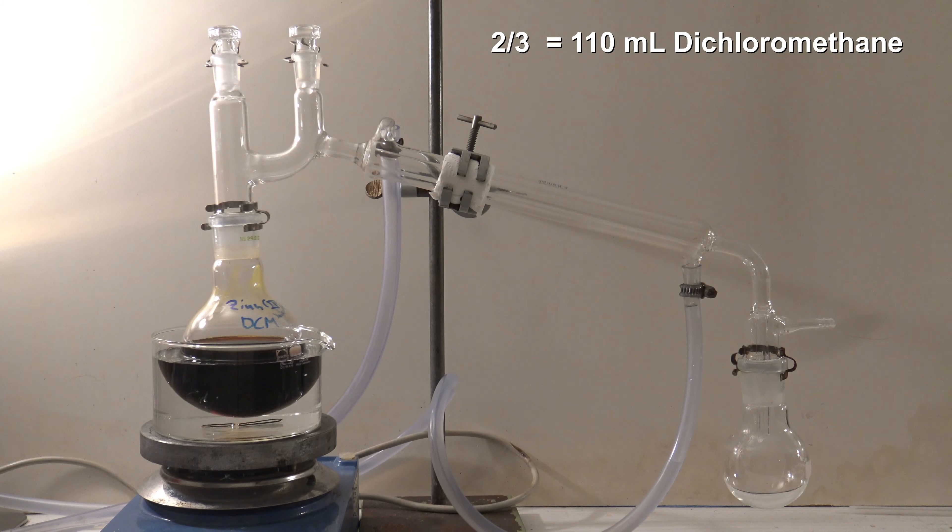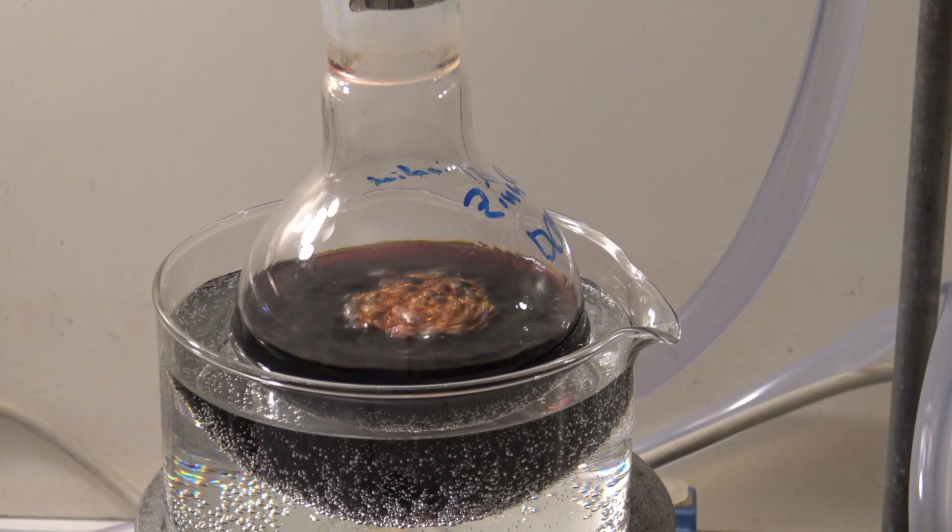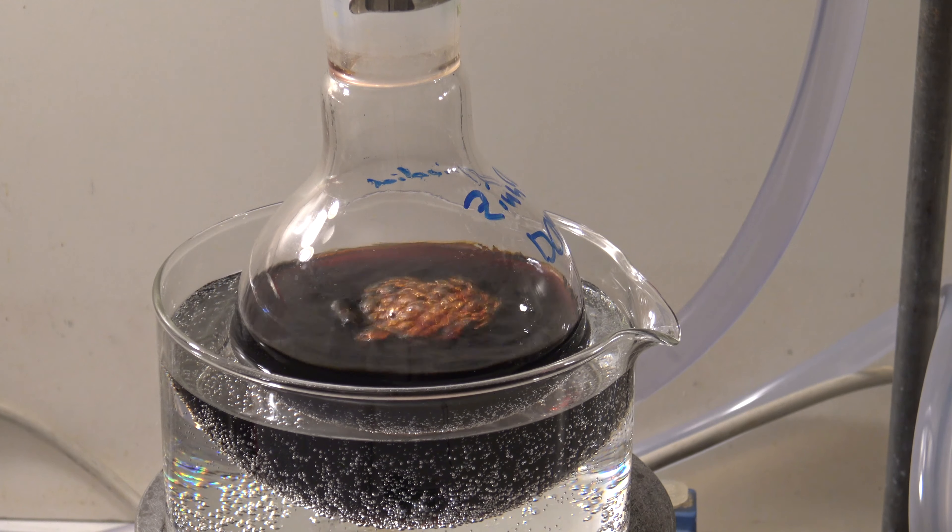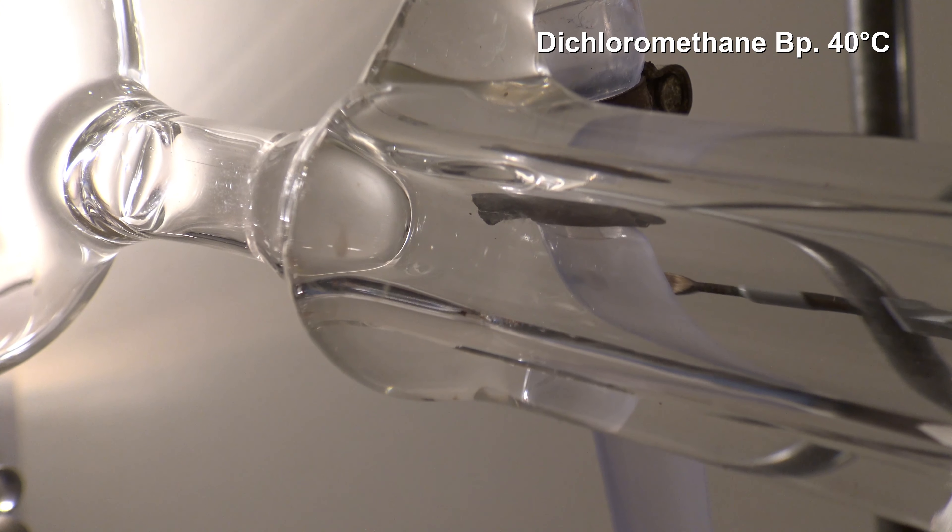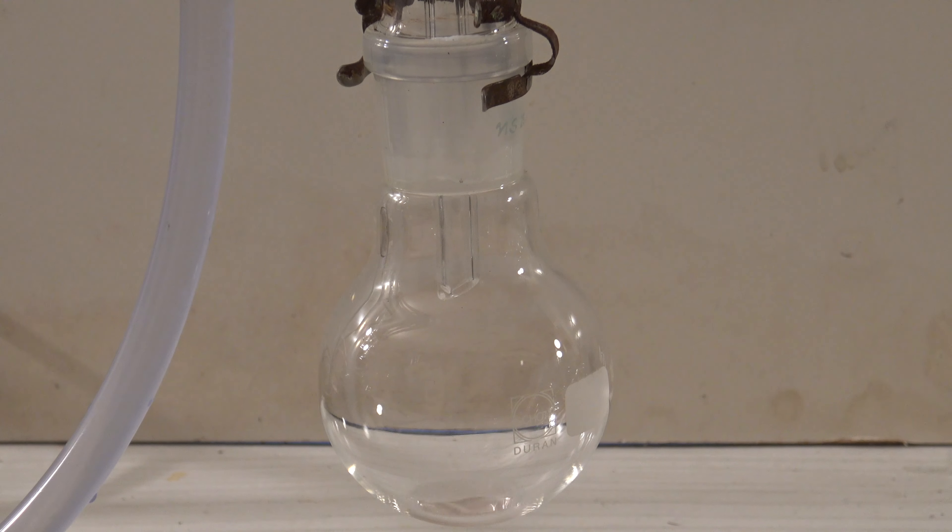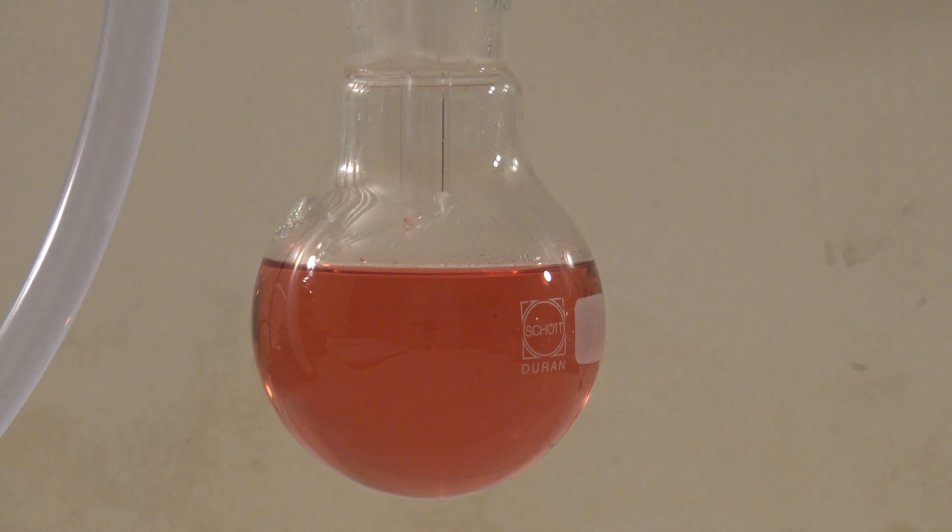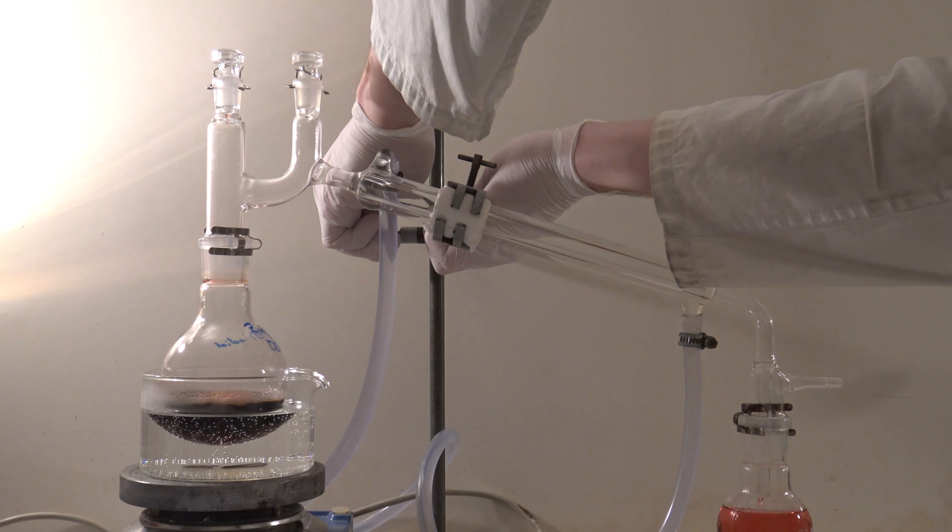Unfortunately, a 100 milliliter round bottom flask was the only one available. Dichloromethane has its boiling point at 40°C, so a water bath is sufficient for heating. In the distillation it could be seen that the separated solvent contained iodine, which meant that residual iodine was still present.